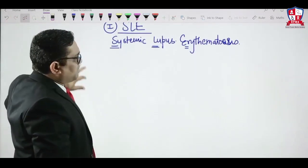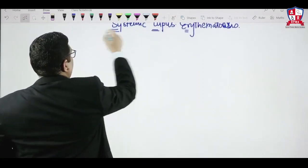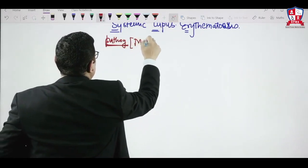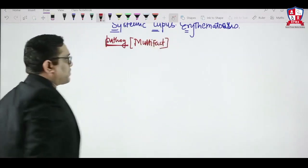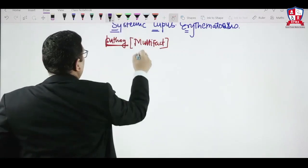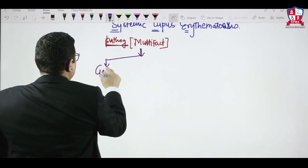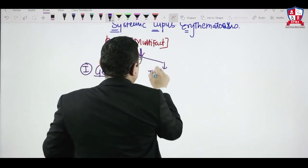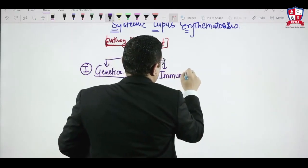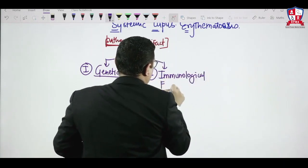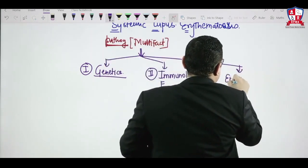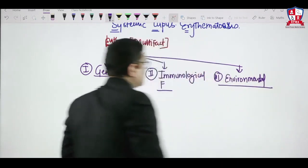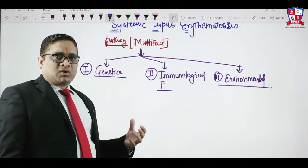The pathogenesis of SLE is multifactorial. The multiple factors involved in development of SLE are: number one, genetics and genes; number two, immunological factors; and number three, environmental factors. These are the three important factors playing a key role in development of SLE.